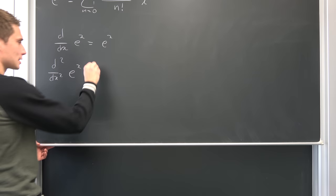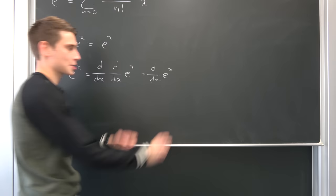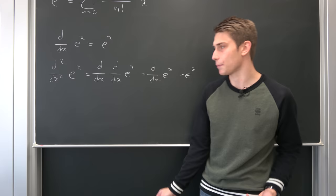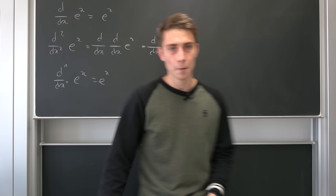But what is the second derivative of e to the x? Well, since this is linear, this is just the derivative of the derivative of e to the x. But we know this is just e to the x, so we have d dx of e to the x. But this is just e to the x. And you can continue this process infinitely many times. You are going to note that the nth derivative of e to the x is going to result in e to the x.